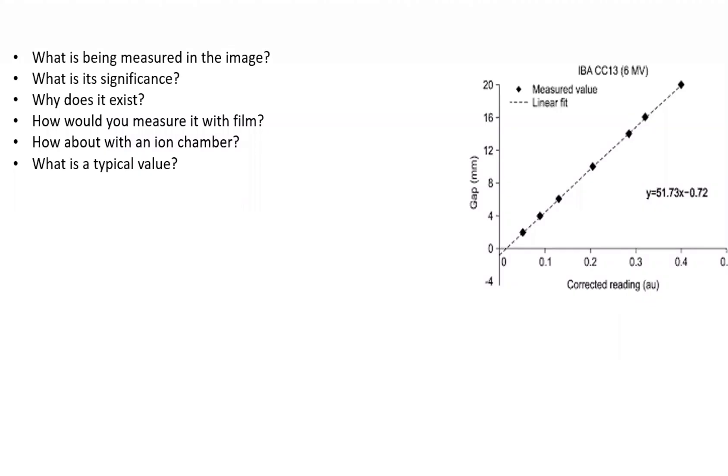On your Part 3 oral exam, you may see a graph like this where you see the gap in millimeters graphed against a corrected reading. Let's talk about what would be measured in this image, what the significance of it is, why it exists, how you would measure it with film and an ion chamber, and then what a typical value would be.